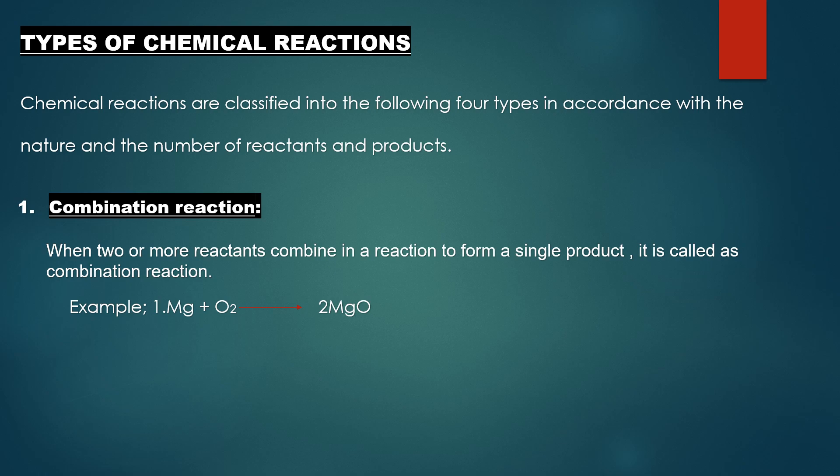Left side is the reactants and the right side is the product. So here you can see there are two reactants and on the right side there is only one product. So when two reactants combine in a reaction to form a single product, then it is called a combination reaction. Another example is given below.